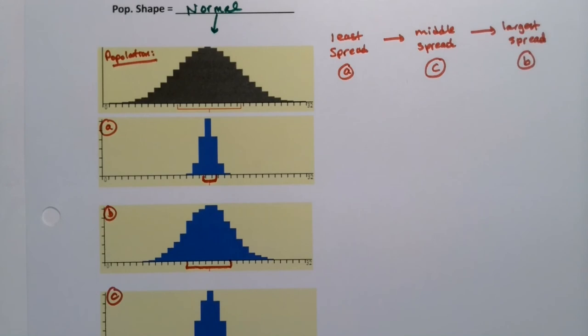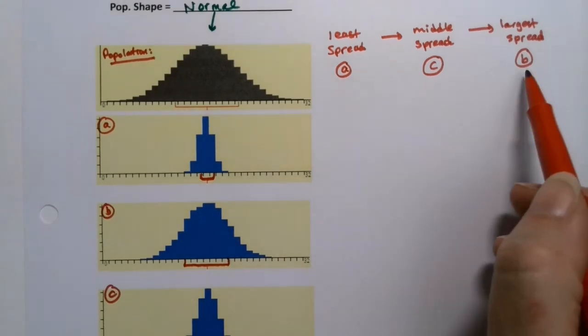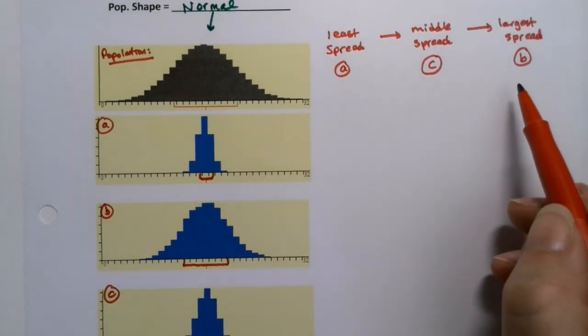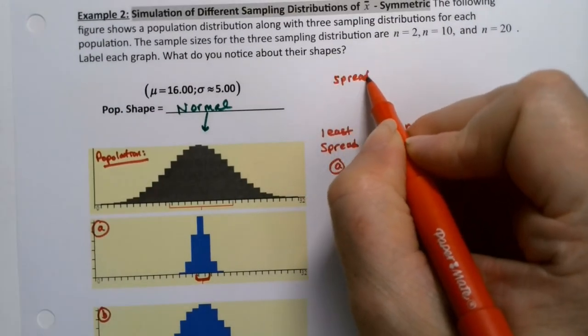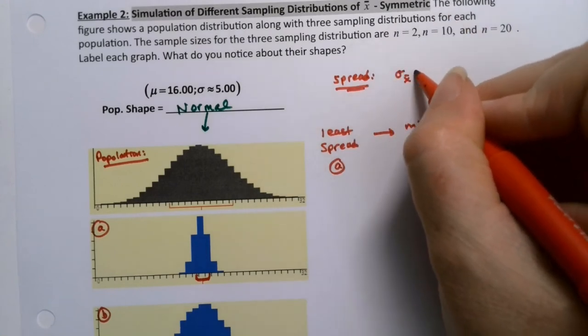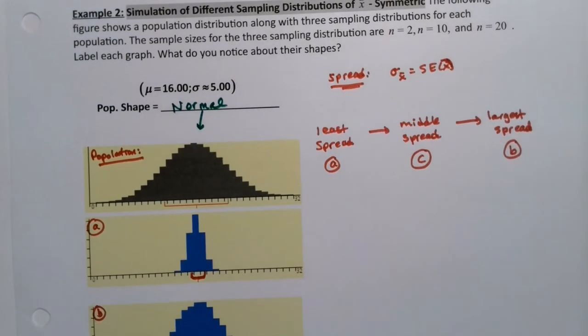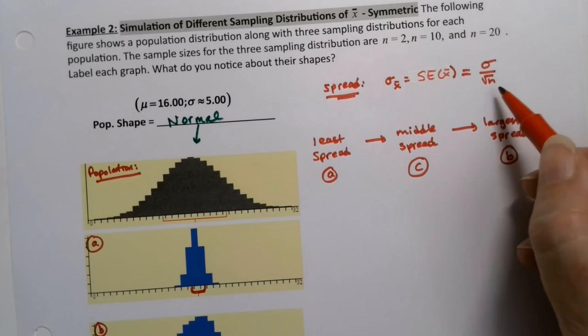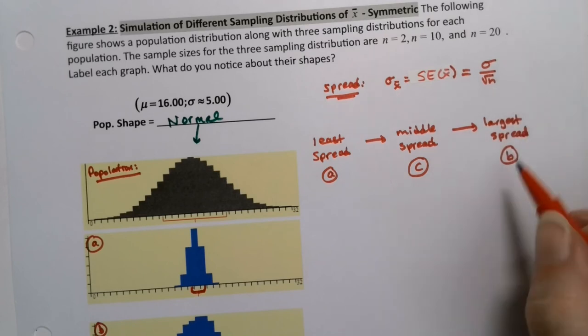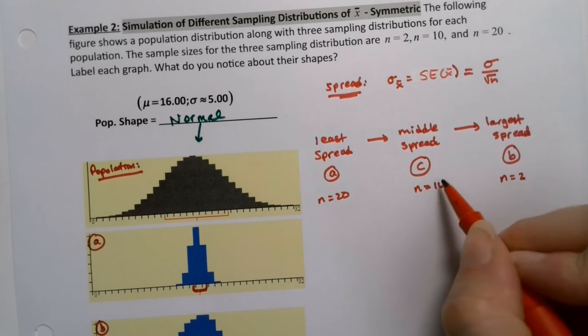Now how does that translate into standard error and thinking about it that way? Letter B would be the largest spread. The largest spread has the smallest sample size. Remember that spread is sigma sub x bar, or SE of x bar, either way. SE is a kind of more modern way to write it. And of course the formula for it is sigma over the square root of n. So because n is in the denominator, then the largest spread would have the smallest n. So this is going to be the one with n equals 2.